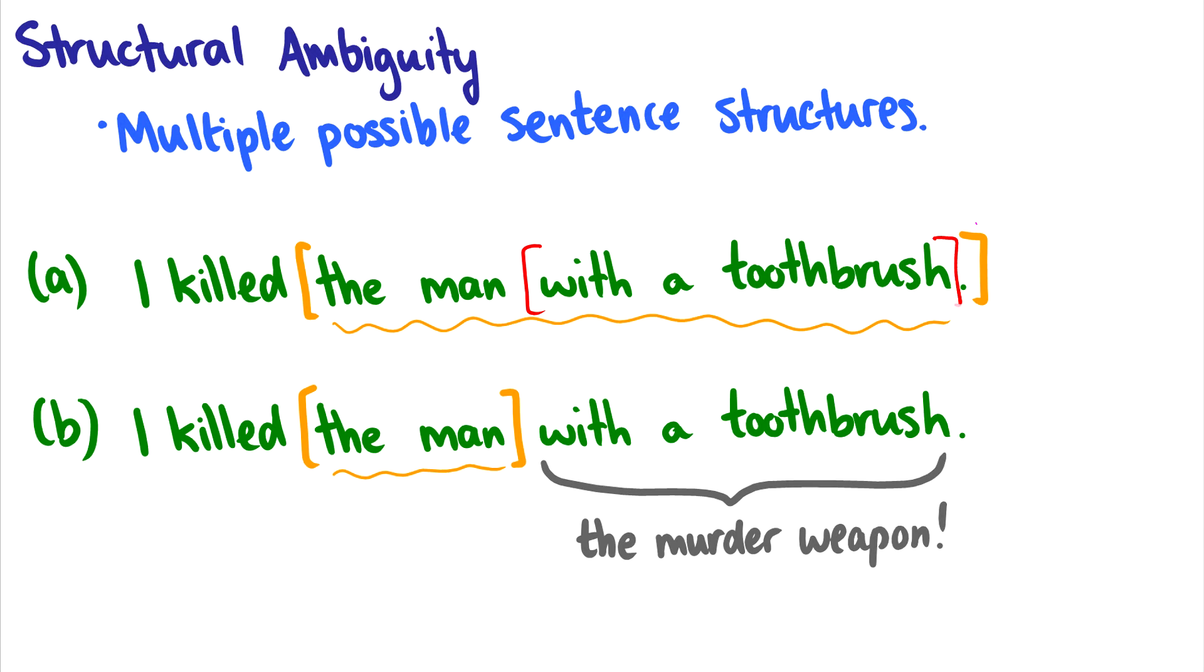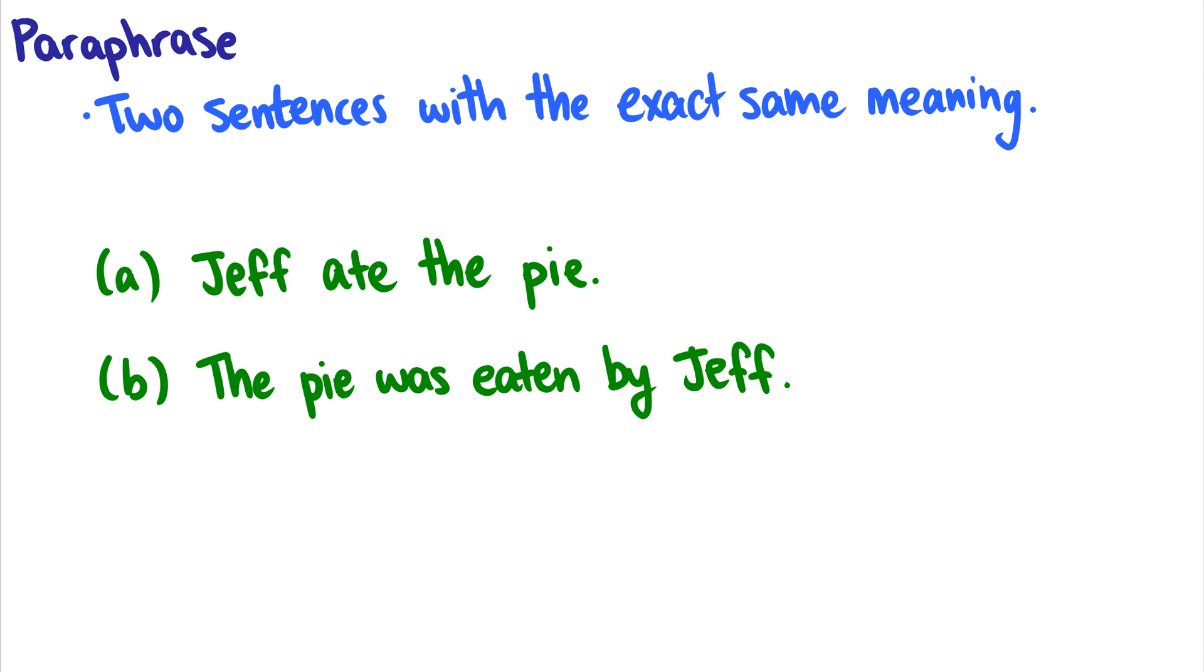So this occurs because of the way that these prepositional phrases work. So with a toothbrush is a prepositional phrase, and it can either modify the man or it could modify the verb. And depending on which way our brain wants to connect this prepositional phrase to the verb or the noun will give us a different interpretation. So this is called structural ambiguity.